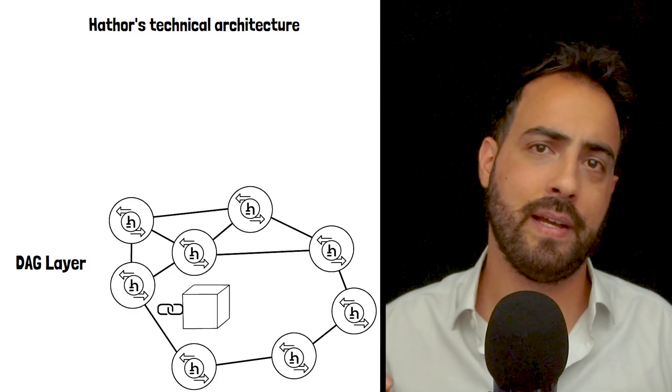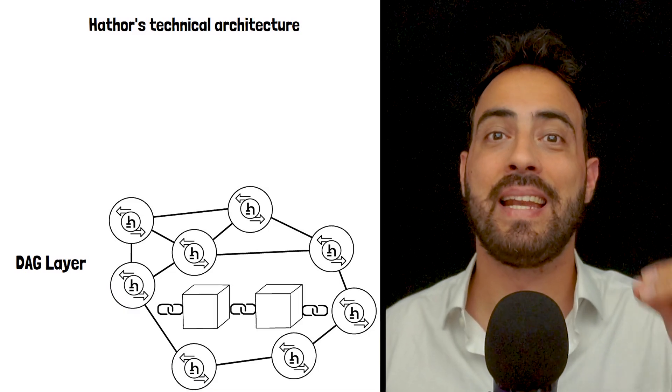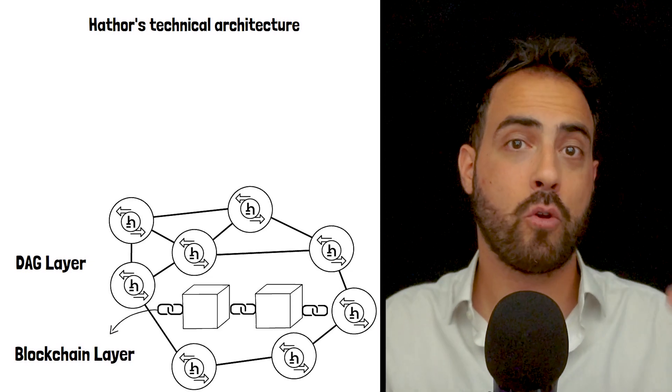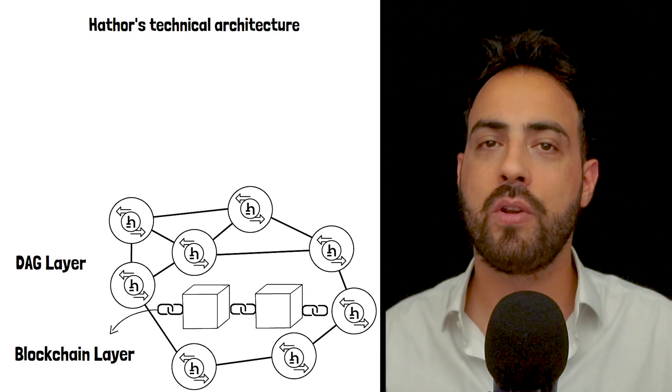The blockchain layer, on the other hand, is embedded within the DAG and is a traditional blockchain. Blocks are mined through proof-of-work and provide high security to the network.